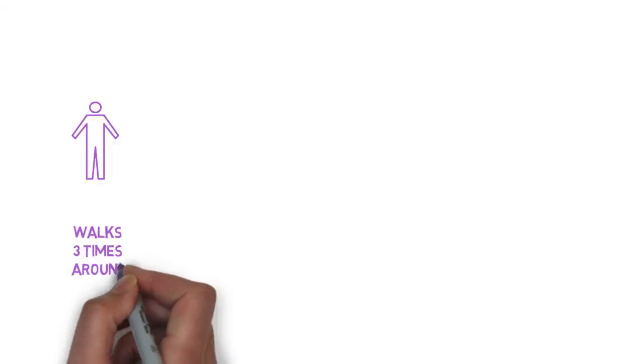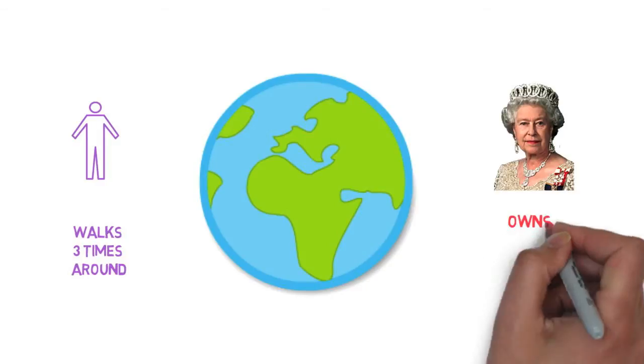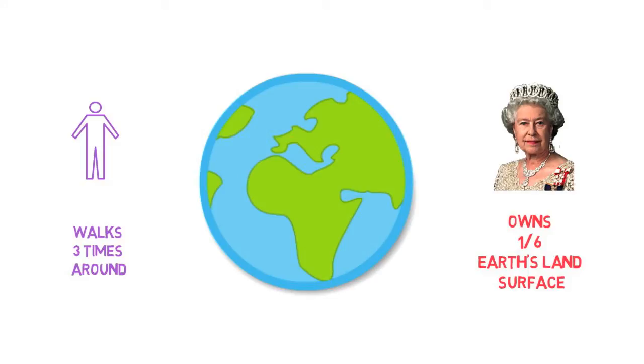And also, did you know that the average person walks an equivalent of 3 times around the Earth during their lifetime? Talking about the Earth, the English Queen is the legal owner of one-sixth of its whole land surface.